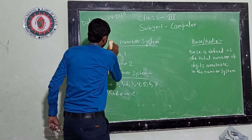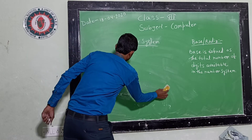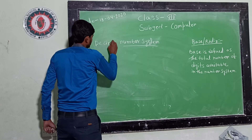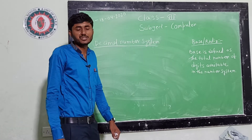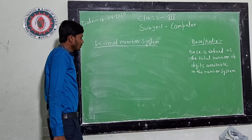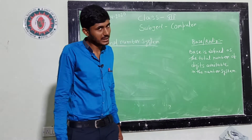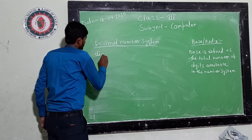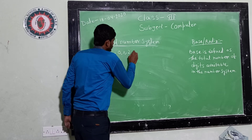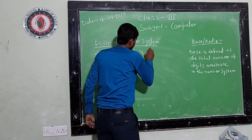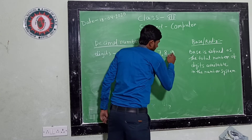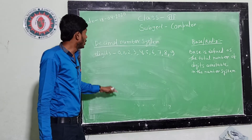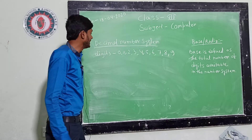The next one is decimal number system. Decimal number system contains 10 digits. The digits are 0, 1, 2, 3, 4, 5, 6, 7, 8, 9. So the base or radix of this number system is 10.